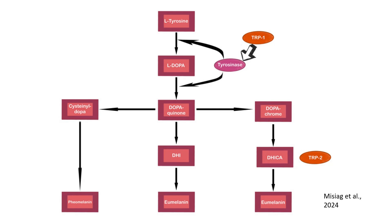TRP1 and TRP2 are tyrosinase-related proteins that play crucial roles in stabilizing tyrosinase activity and guiding the synthesis of eumelanin. TRP1 in particular influences the eumelanin to pheomelanin ratio, promoting the production of eumelanin. This pathway demonstrates the complex regulation of melanin synthesis, with tyrosinase as the key enzyme initiating the process, and TRP1 and TRP2 ensuring efficient production of protective eumelanin.